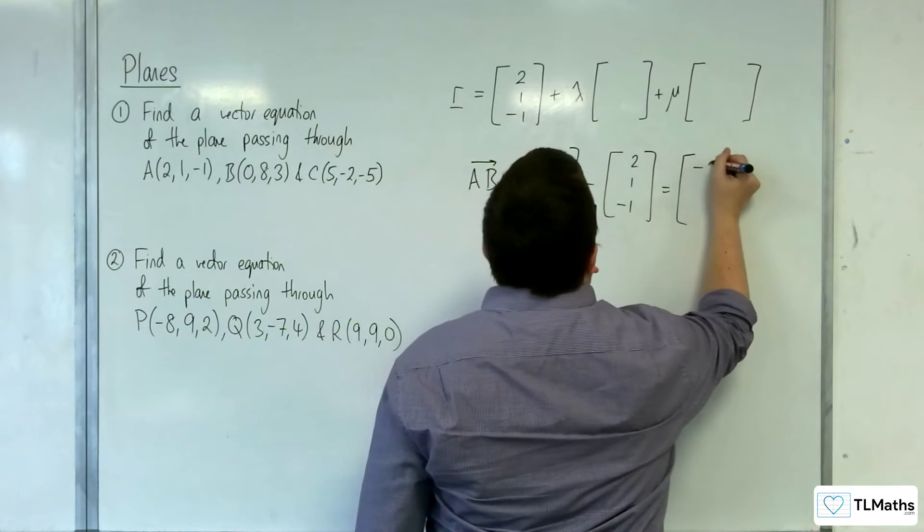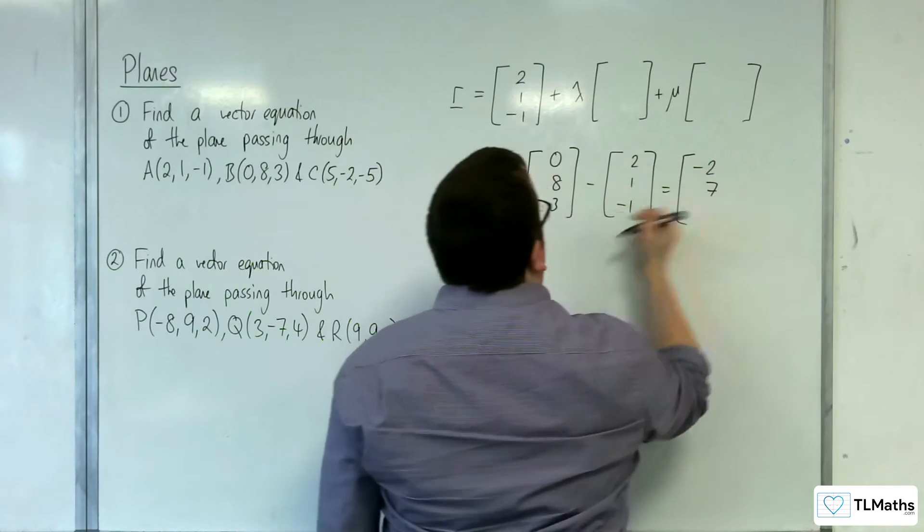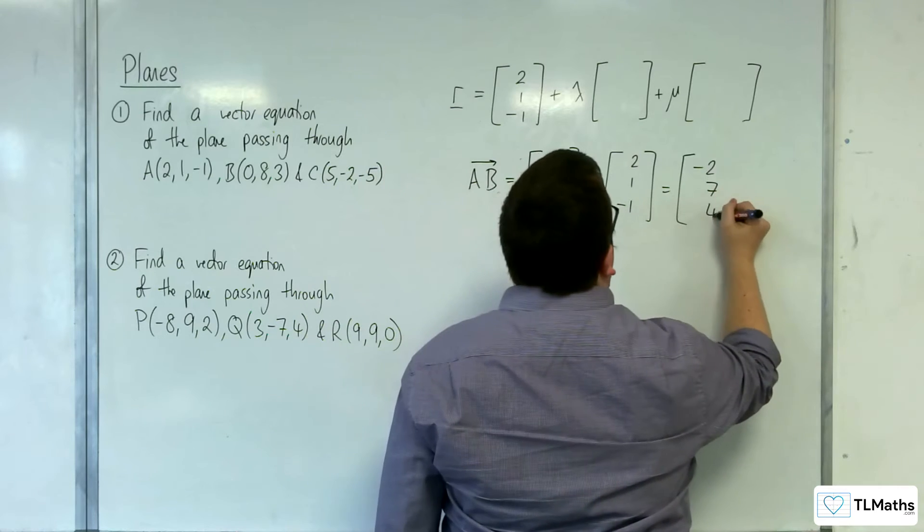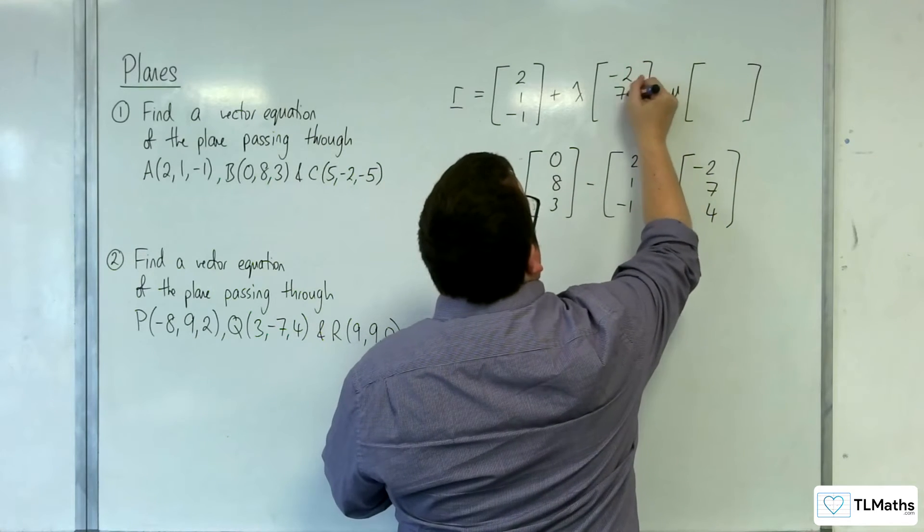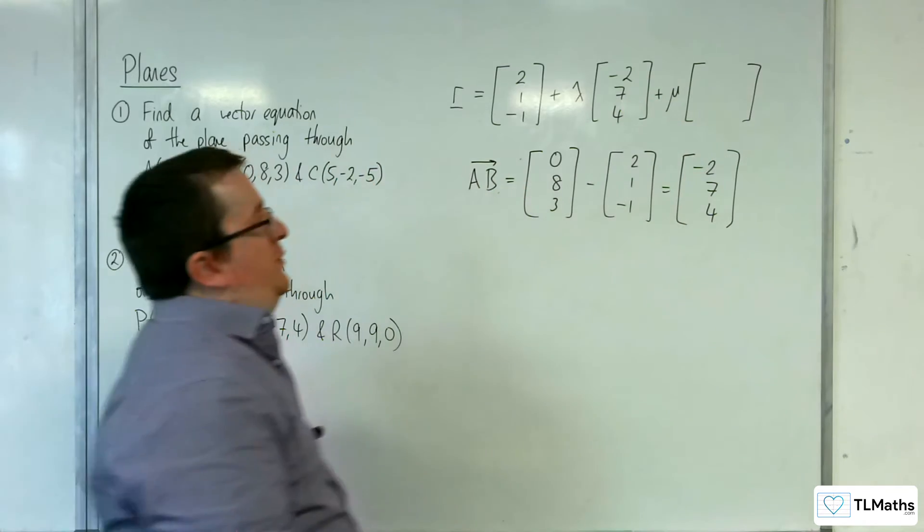So 0 take away 2 is minus 2, 8 take away 1 is 7, 3 take away minus 1 is 4. So minus 2, 7, 4 is the first direction vector.